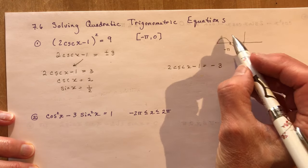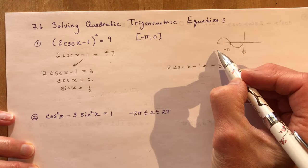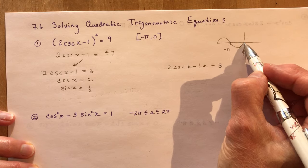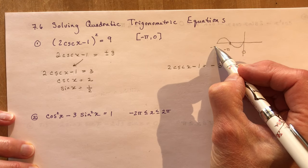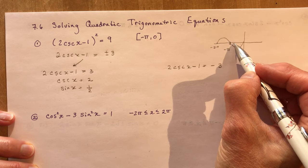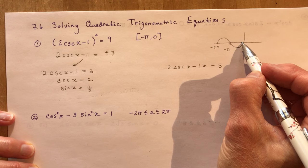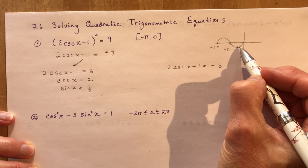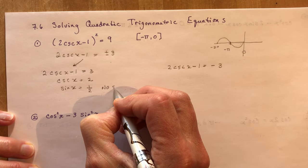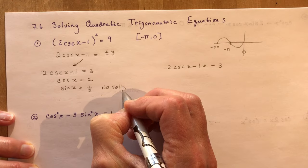So where is sine x equal to 1 half? Looking at the domain we have here — minus pi to 0 — for the basic sine function in that interval, sine x could never equal 1 half. So this gives no solution for this equation.